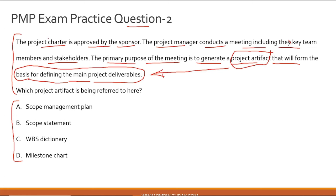We are just at the end of the project charter approval by the sponsor, so we can safely assume we are out of the initiation stage and the project has moved into planning. Which project artifact is being referred to? The options are: scope management plan, scope statement, WBS dictionary, and milestone chart. Option A — scope management plan — seems plausible because it defines how project deliverables will be structured, their success criteria, and which methodology will be used.